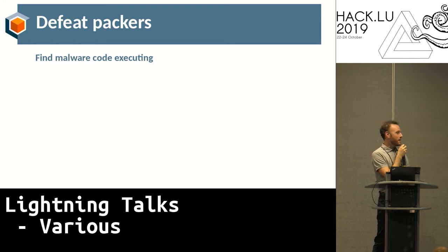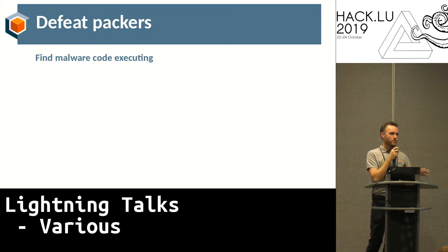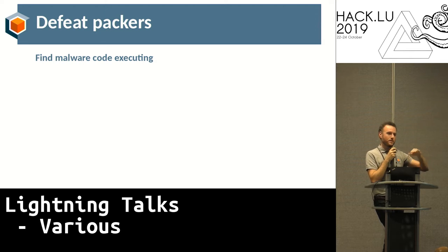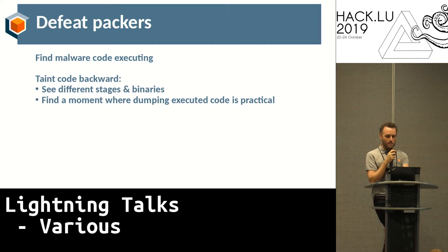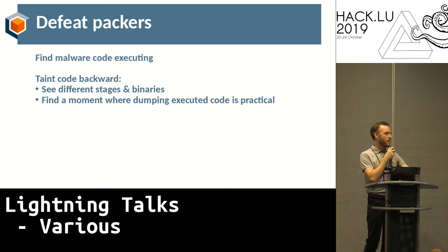The third example is defeating packers. There was actually a workshop this morning about that by Benoit Stevens. Using timeless analysis, you can find where your malware is executing, and when you do it may already be convenient to dump there — or it's not. You can then apply the taint engine and trace that data all the way back to the original packer. That makes it fairly easy, or at least easier, to see all the stages that led to the binary being dumped. Maybe along the way there's a moment where dumping is more practical — perhaps it was extracted as a resource from the file — or you find all the new binaries involved in the stage, apply the same process again, and dump them. At the end you get everything and can load it in IDA and do your usual analysis.